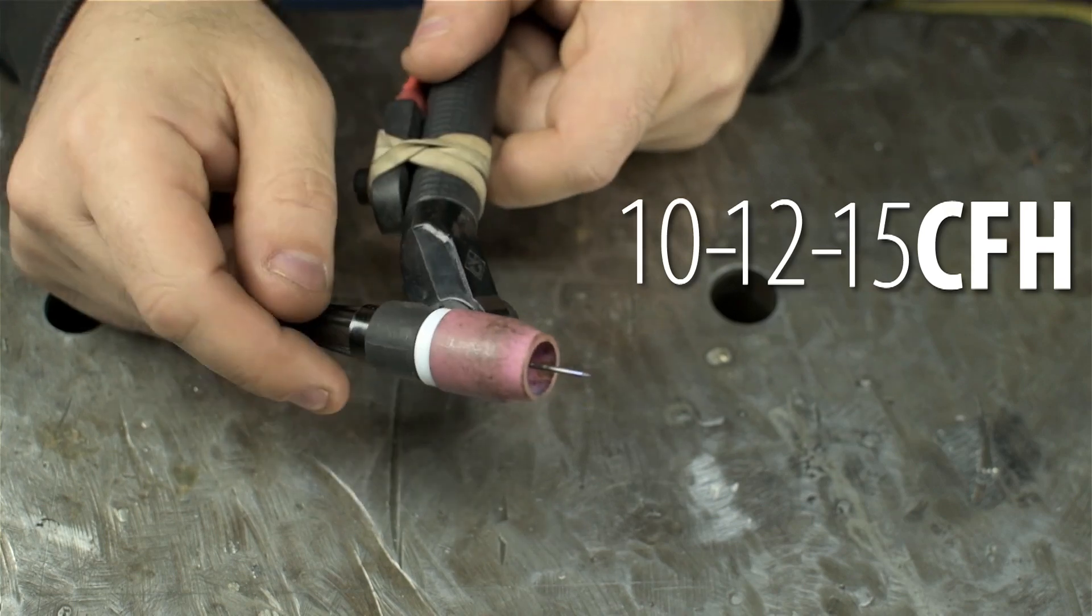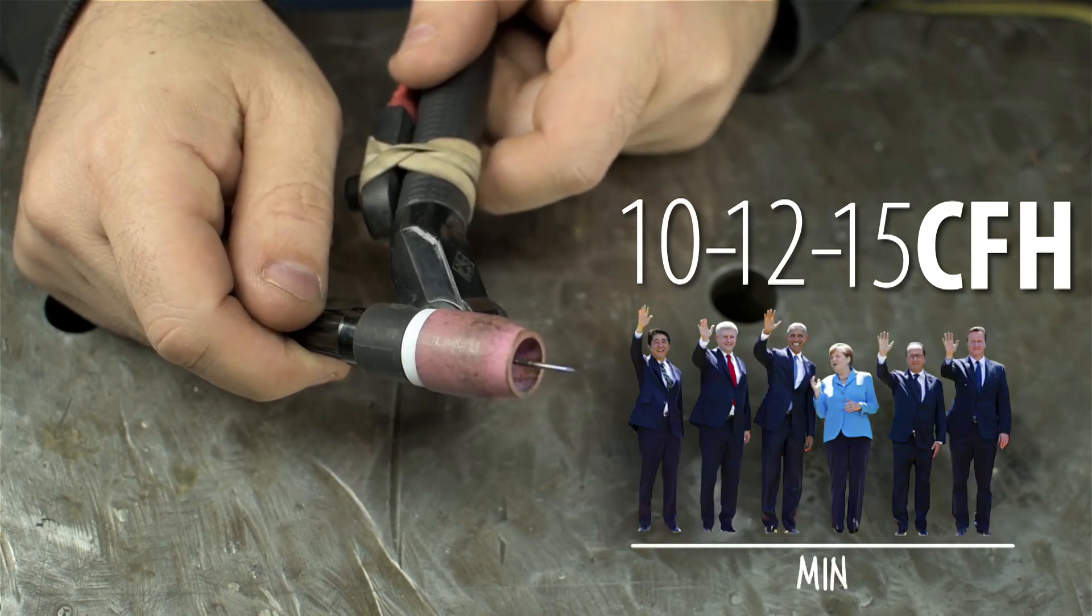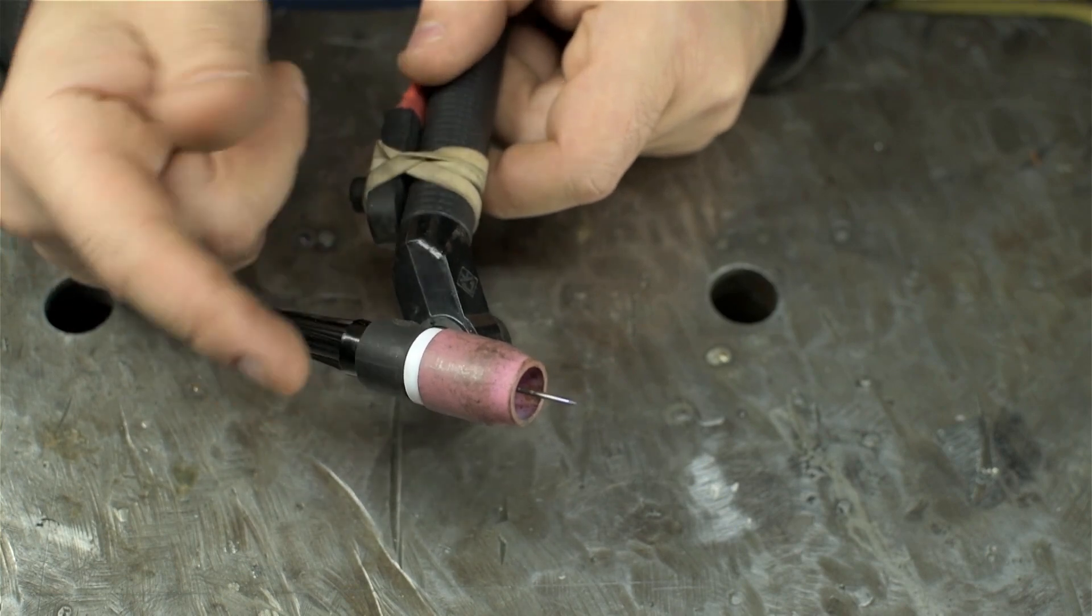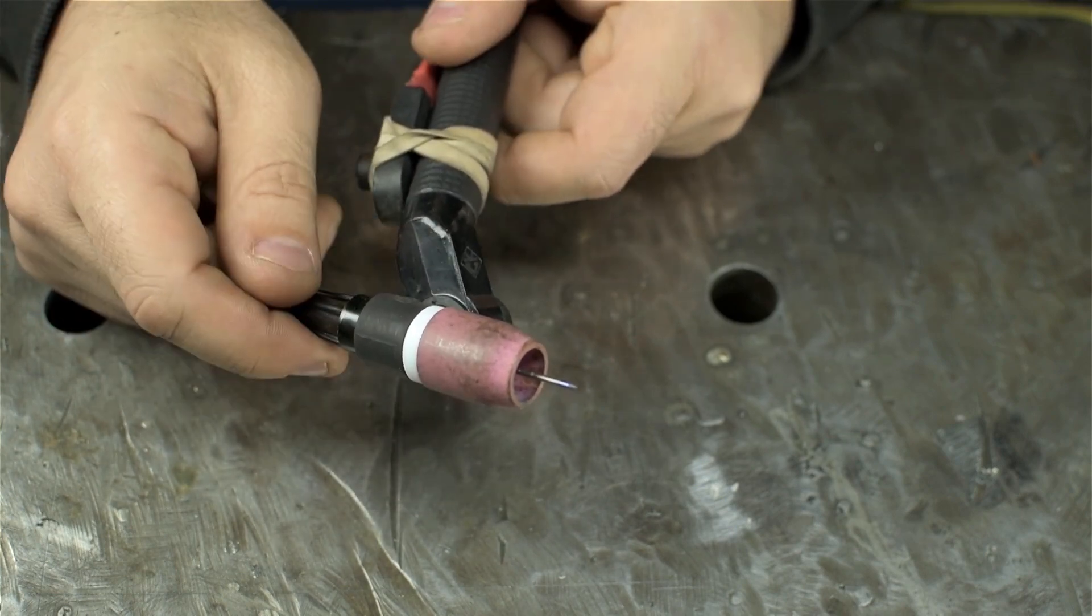And I run this about 10 to 12, maybe 15 cfh. That's cubic feet of argon gas per hour coming out of that hole, which is in the neighborhood of 5 or 6 liters per minute. For now, let's just pretend that that's all there is to it. Number 8 cup, set it to a certain flow rate. Bigger cup, more flow. Smaller cup, less flow. So far so good.